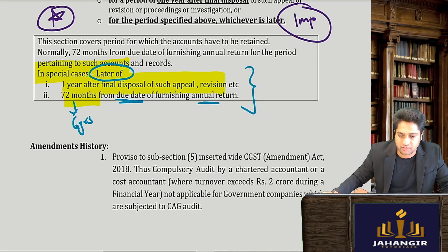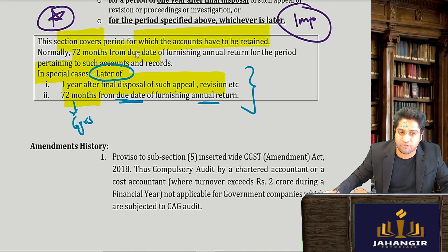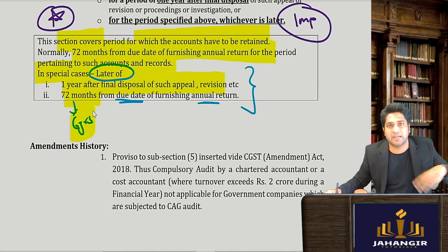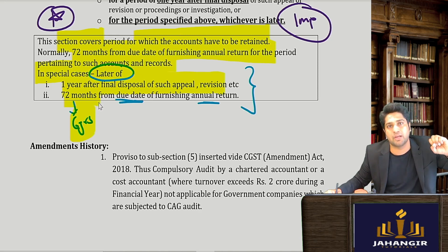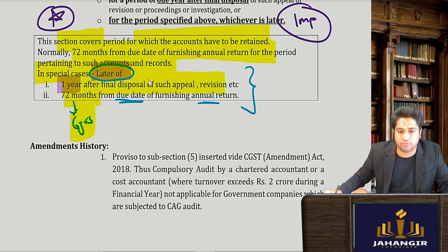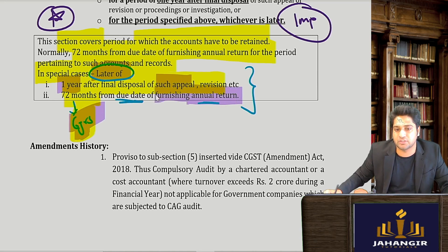Section 36 covers the period for which accounts have to be retained. Normally it is 72 months from the date of furnishing the annual returns for the period pertaining — so normally six years. But if the matter has gone in appeal, revision, or there is a court dispute or litigation, then we must wait for the litigation to conclude as well. So it is one year from the appeal or six years from furnishing the annual returns, whichever is later.